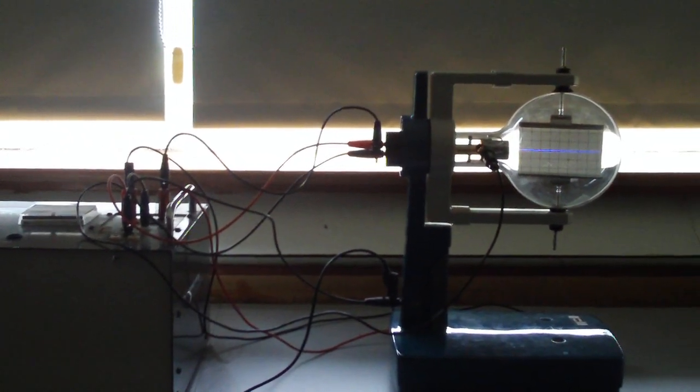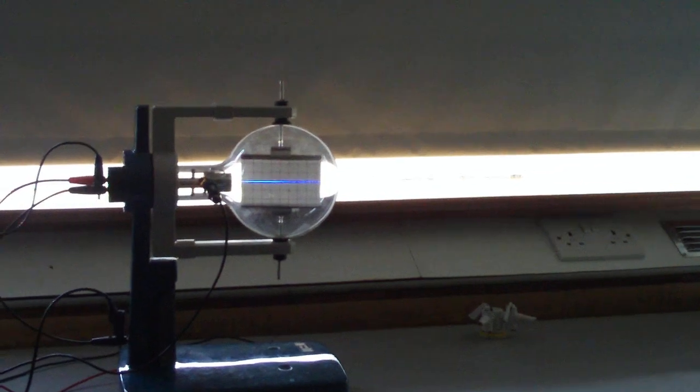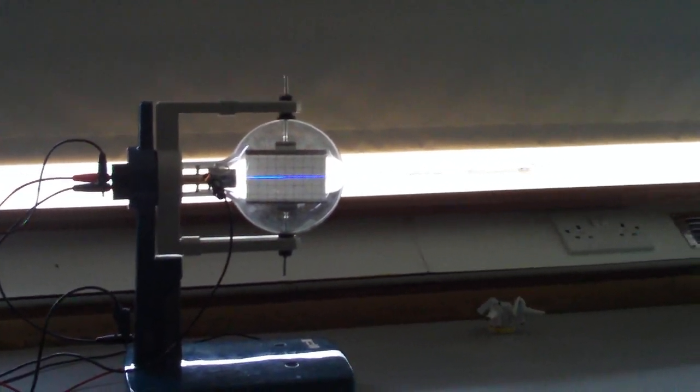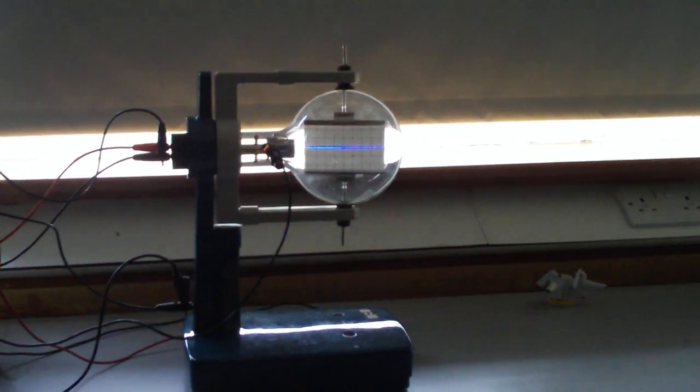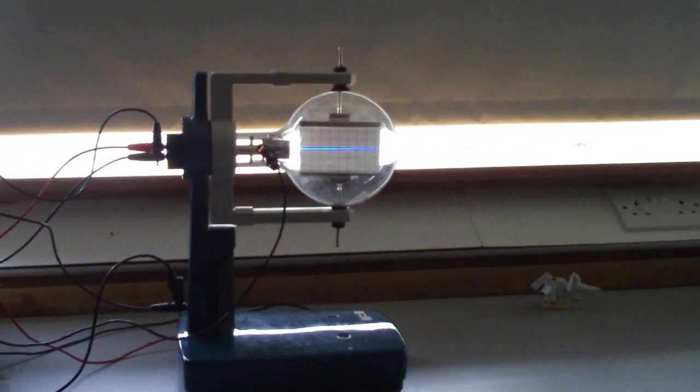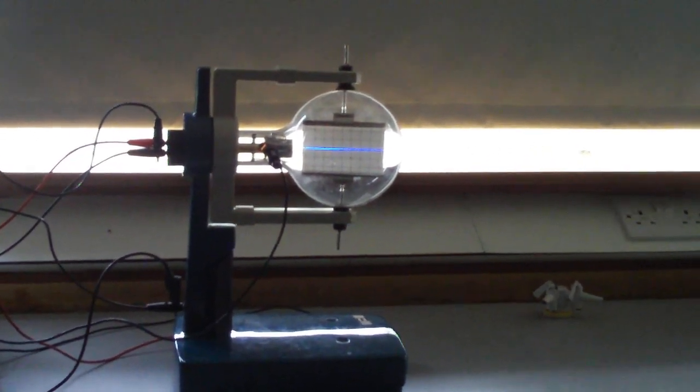So if I turn this up, you'll see a blue line there. What that blue line is, is electrons. Now electrons are one of the particles that you have inside an atom, and electrons are what carry electricity. In the case of the television, the electrons are what make the picture on the screen.